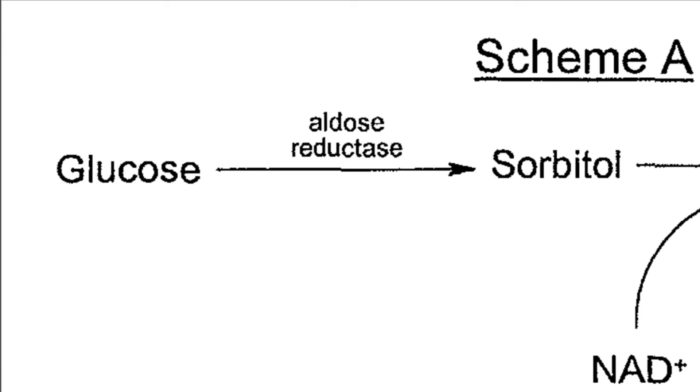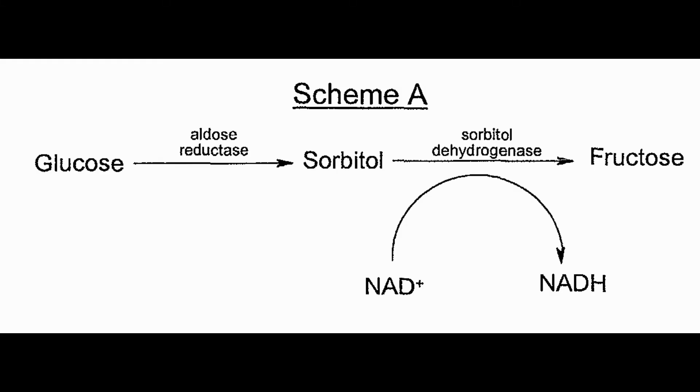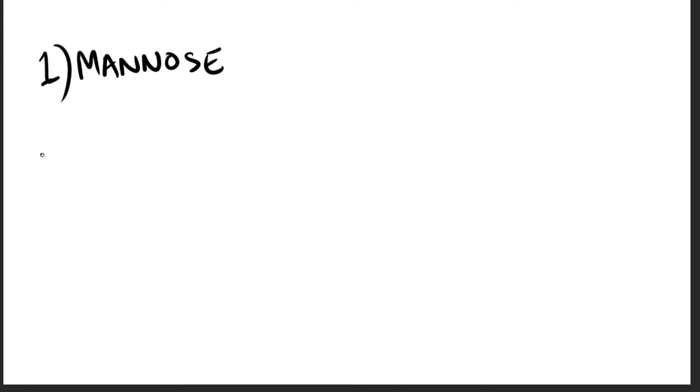Aldose reductase reduces glucose, producing sorbitol. In cells of the liver, ovaries, and seminal vesicles, there is a second enzyme, sorbitol dehydrogenase, which can oxidize the sorbitol to produce fructose. The benefit for sperm cells is that they can use fructose as a major carbohydrate energy source.